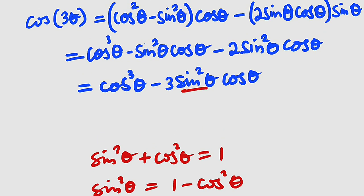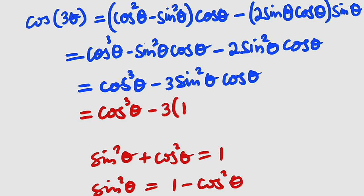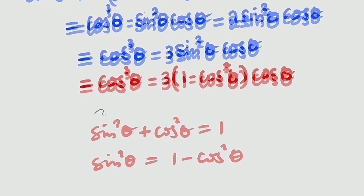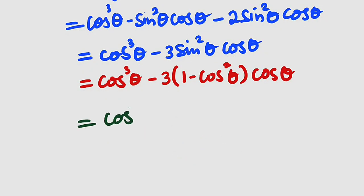So instead, we replace sine squared theta with 1 minus cosine squared theta. This equals cosine cubed theta minus 3 multiplied by 1 minus cosine squared theta, with cosine theta outside. So this is equal to cosine cubed theta.